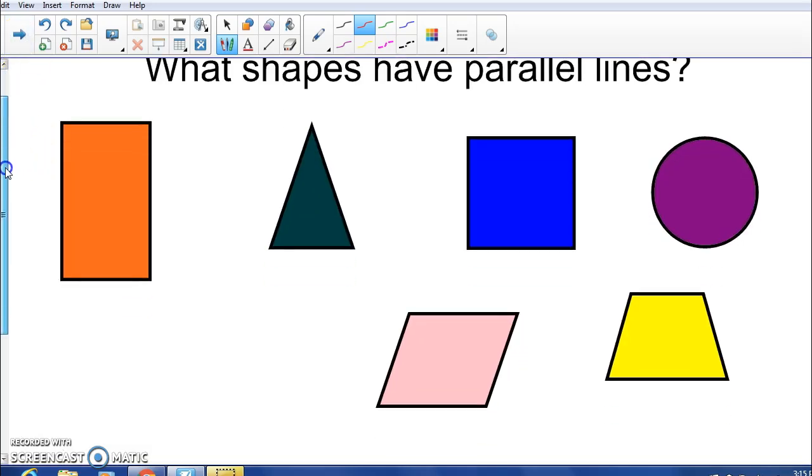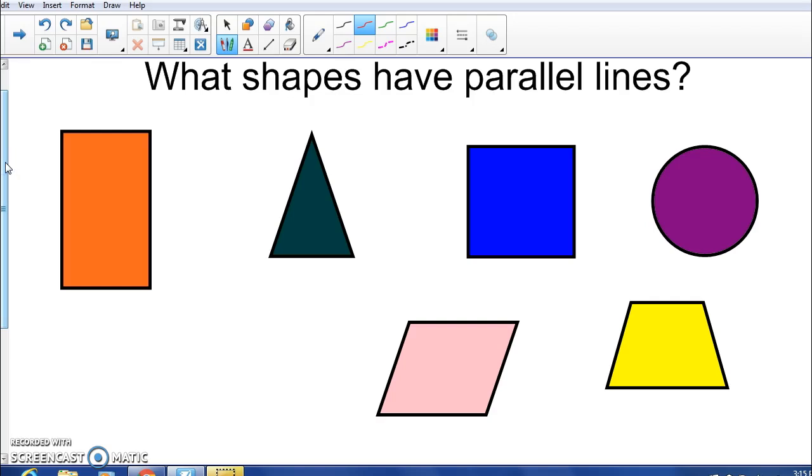Here we have some shapes. Which ones of these shapes have parallel lines? We can tell from the rectangle, the top and bottom, if we extended these lines out a bit, are they ever going to touch each other? No. That's exactly what parallel lines are. So this one has parallel. If we did the same thing with the left and right line, they would never touch either. So this one is actually special. It has two sets of parallel lines.